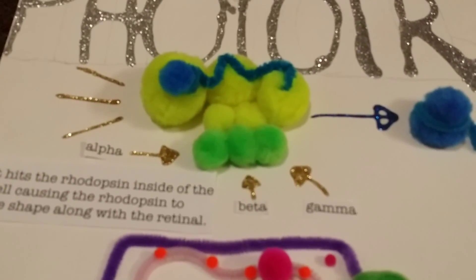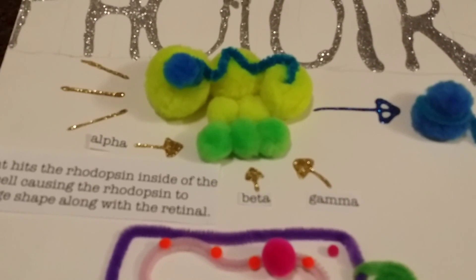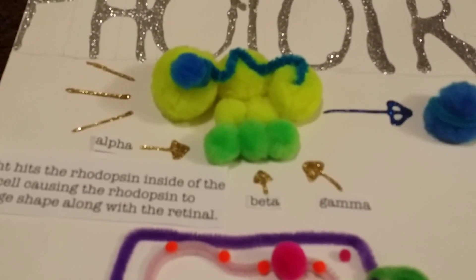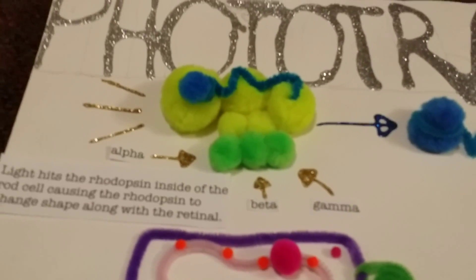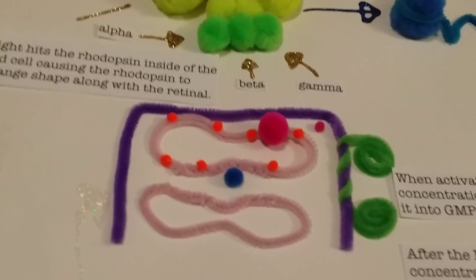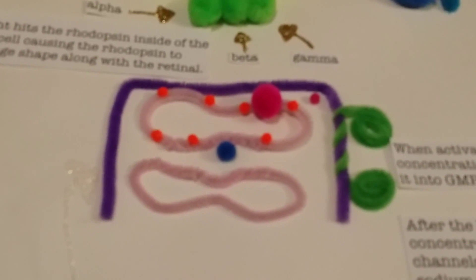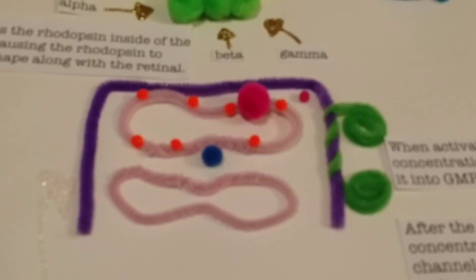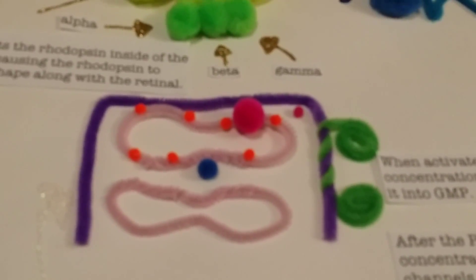The transducin has three subunits: alpha, beta, and gamma. When light hits the transducin and the rhodopsin, the transducin breaks off, and the alpha subunit comes into the rod cell and attaches to phosphodiesterase.